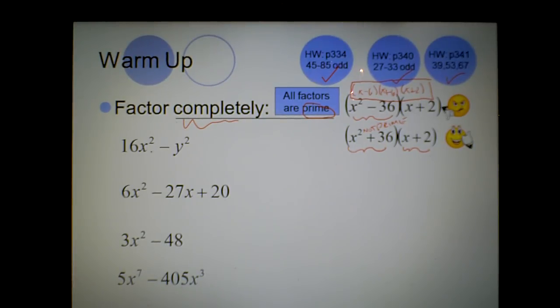So, I recognize this hopefully pretty quickly as the difference of two perfect squares. I'm going to skip this one for a minute because this is also the difference of two perfect squares but not quite until you pull out the common factor of 3. So, if you pull out 3, you get x squared minus 16 and then break down the x squared minus 16.